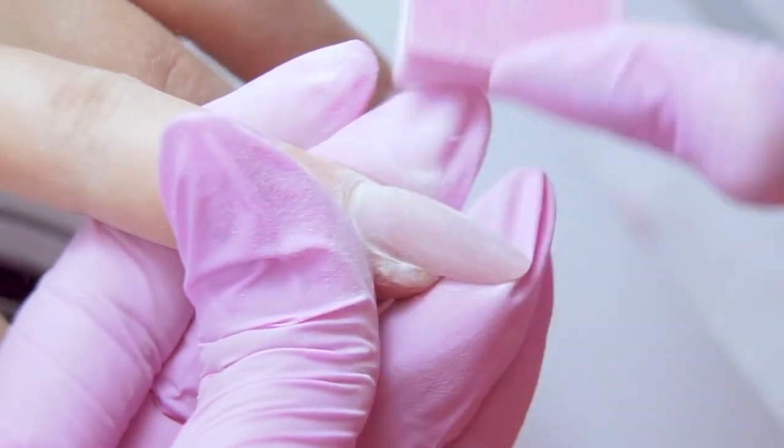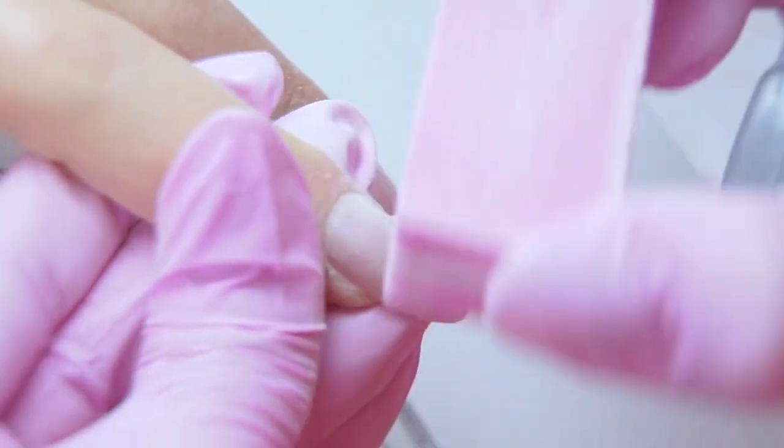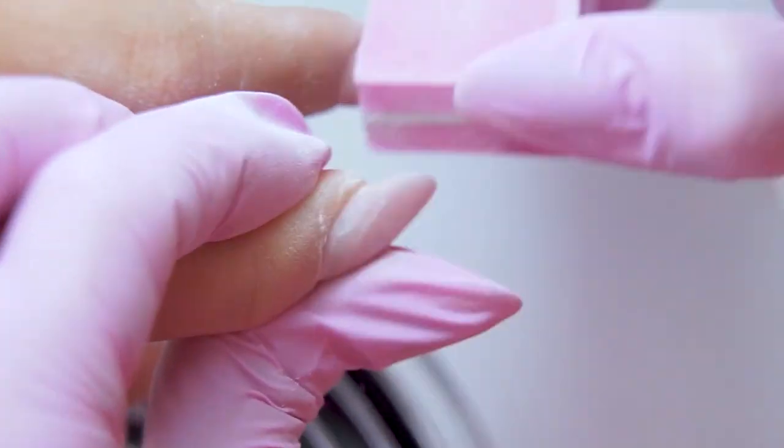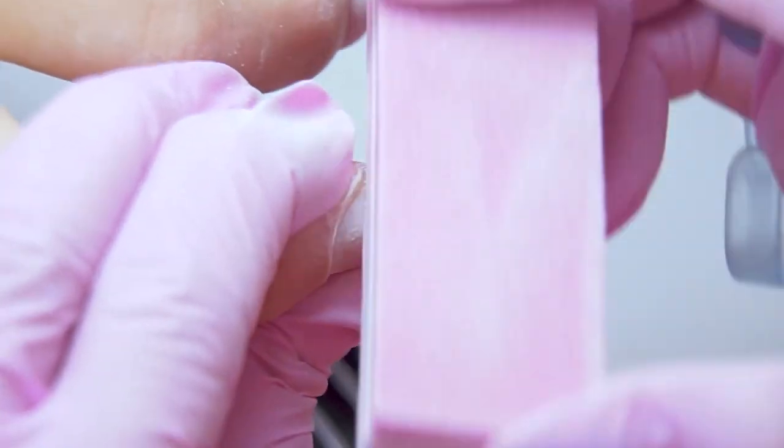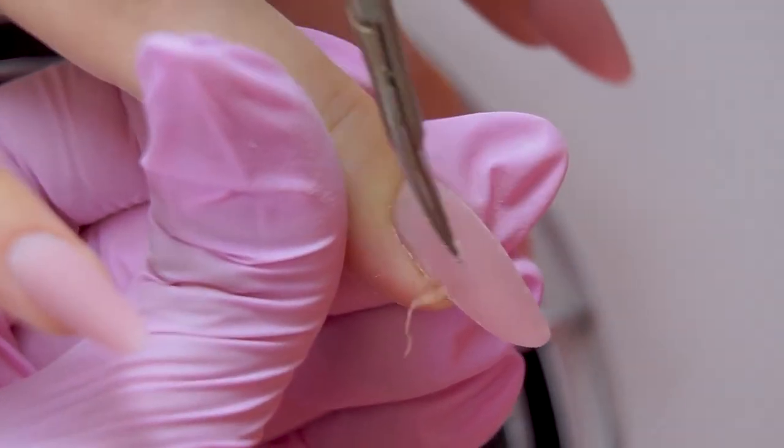Then I buff the surface with a soft side. If I had not applied gel polish all over the nail plate, I wouldn't have polished it that much. But since we are doing a French manicure, I need a smooth surface. I lift up the cuticle and cut it off with scissors.